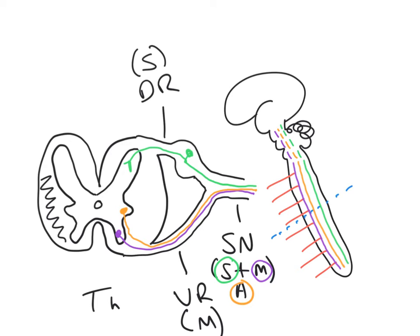This is a tremendously powerful concept because it helps us to understand the fact that the cranial nerves which emerge from the brain stem have very close affinities with the spinal nerves. The axons found within those cranial nerves emerging from the brain stem have got just the same origins or destinations as those axons which were destined for the spinal cord.